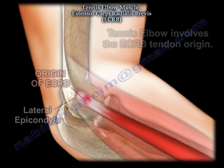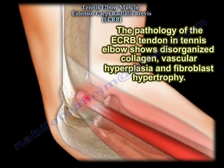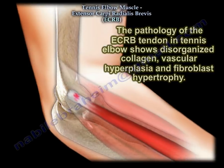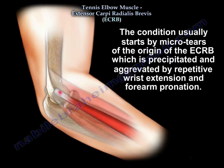The pathology of the extensor carboidialis previs tendon in tennis elbow shows disorganized collagen, vascular hyperplasia, and fibroplast hypertrophy. The condition usually starts by micro tears of the origin of the extensor carboidialis previs, and that is precipitated and aggravated by repetitive wrist extension and forearm pronation.